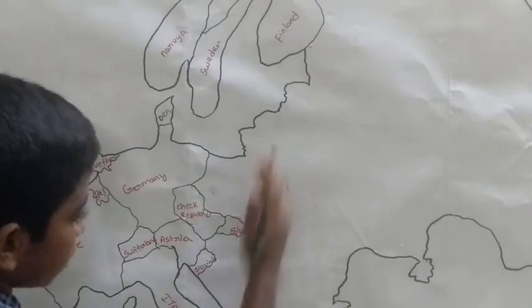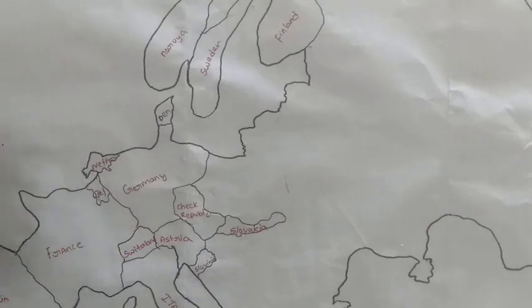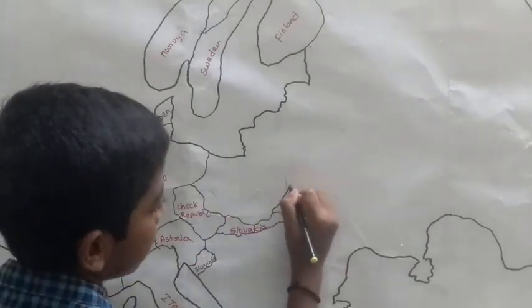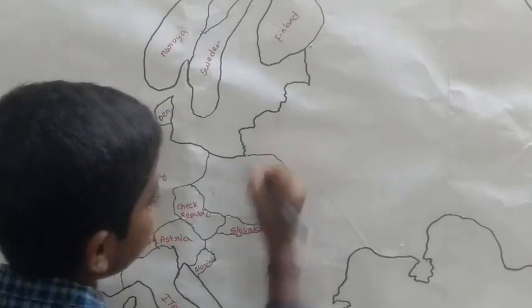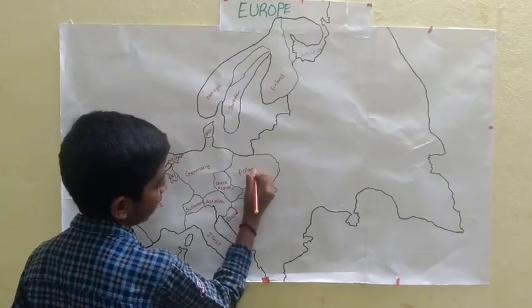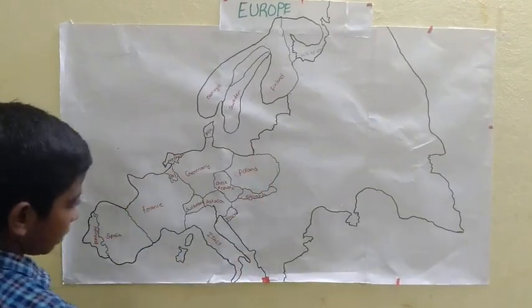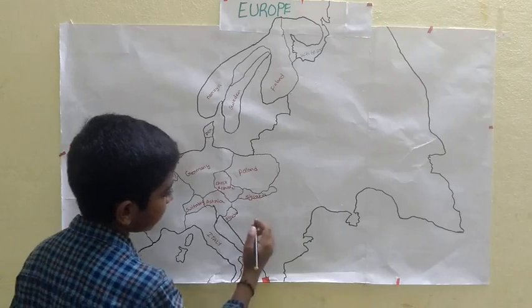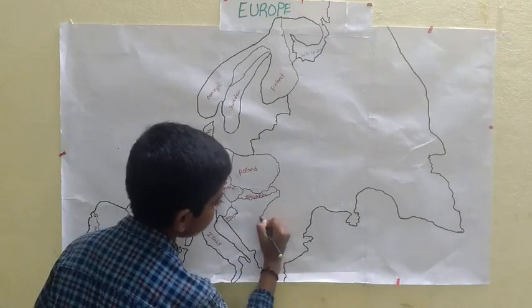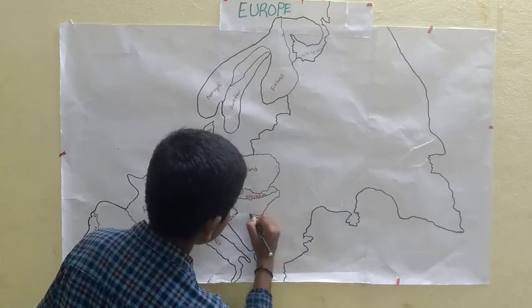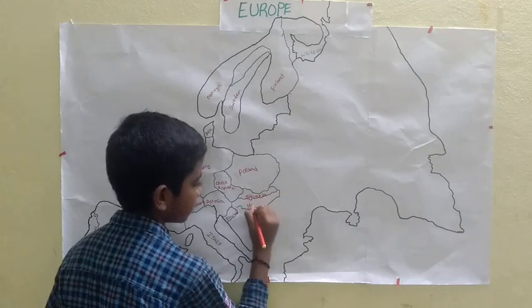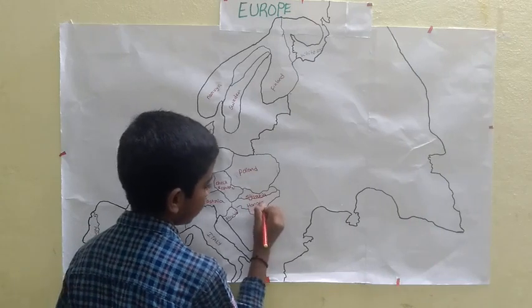A neighboring country to Slovakia is Poland. Another neighboring country of Slovakia is Hungary.